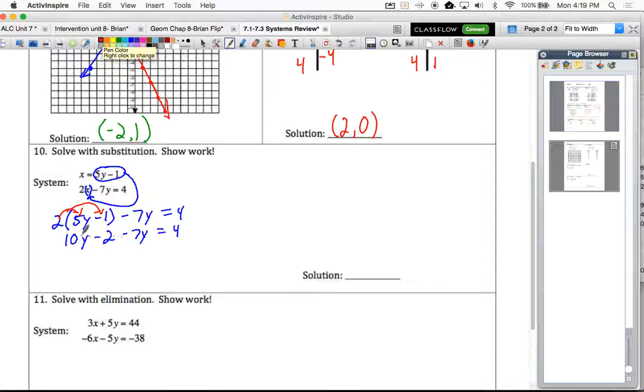Now combine like terms, looking on the same side of the equation. We've got 10y and minus 7y. So together that would be 10 minus 7 or positive 3y. All right, so now we've got 3y minus 2 is equal to 4.